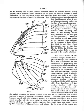Flagellomere: an antennomere comprising part of the flagellum. Flagellum: the part of the antenna distal to the pedicel, composed of one or more segments called flagellomeres. Foramen magnum: anatomical feature, the posterior opening of the head capsule, covered by the cervix.